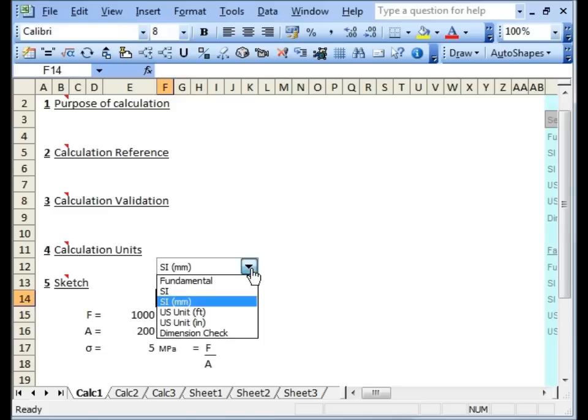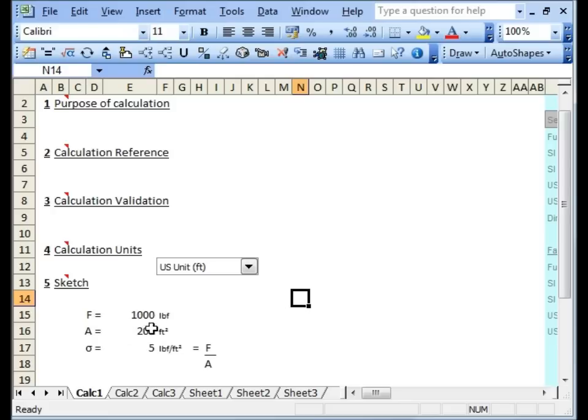And all I have to do is change to a different set of units. And you can see that the calculation now can be used by someone in the US who's using a different set of units. What it means is that the calculation becomes usable by everybody all over the world, and it's remarkably simple to do.